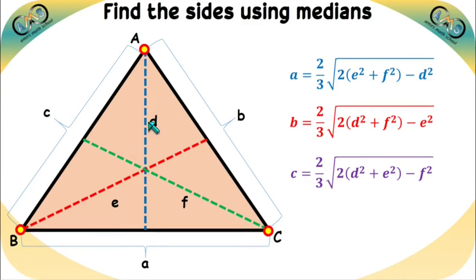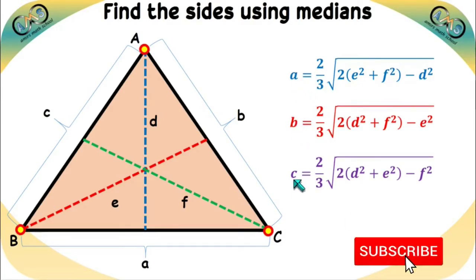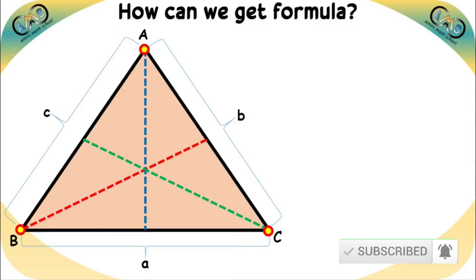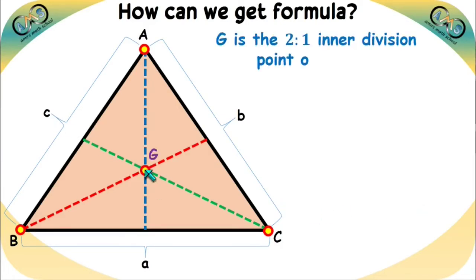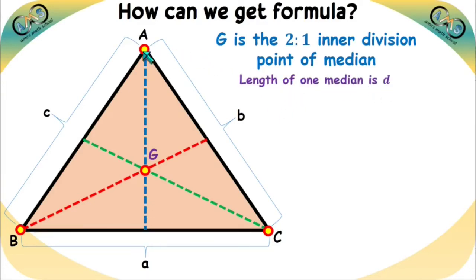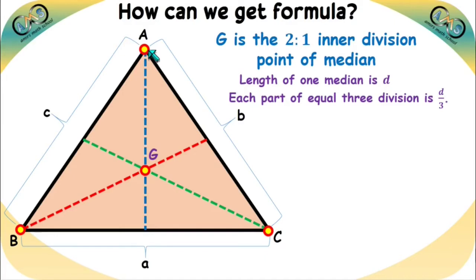If we substitute the values of D, E, and F into these formulas, we can easily get the side lengths a, b, and c. Now let's see how the formula is derived. The centroid G is the 2:1 inner division point of any median — meaning the longer part from the vertex is 2/3 of the median and the shorter part is 1/3. So if a median has length D, the segment from the vertex to the centroid is 2D/3, and the remaining part is D/3. Similarly for medians E and F.